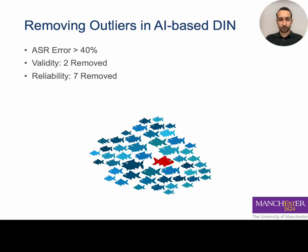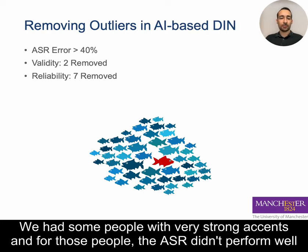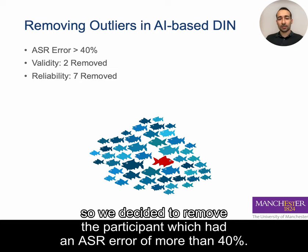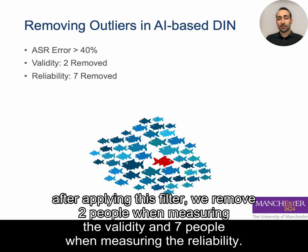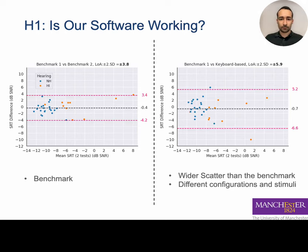For reliability, we take the first and second runs. We had some participants with very strong accents for whom ASR did not perform well, so we decided to remove participants with an ASR error greater than 40%. After applying this filter, we removed 2% of data when measuring validity and 7% when measuring reliability.